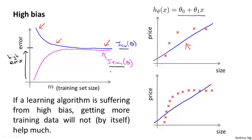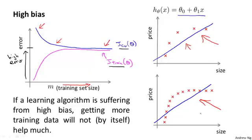This implies something very interesting: if a learning algorithm has high bias, as we get more and more training examples, the cross-validation error isn't going down much — it's basically flattened out. So if a learning algorithm is already suffering from high bias, getting more training data by itself will actually not help that much. In the figure, we had only five training examples and fit a certain straight line, and with a ton more training data we still ended up with roughly the same straight line. Knowing this can prevent you from wasting a lot of time collecting more training data where it might just not end up being helpful.